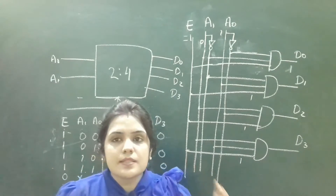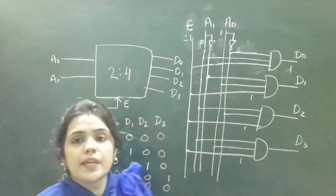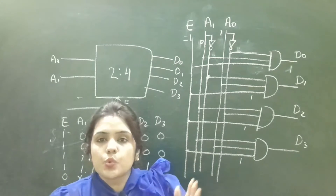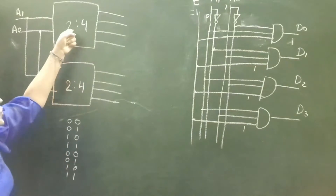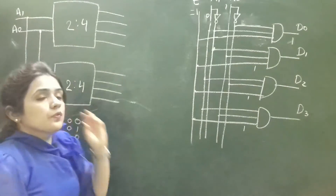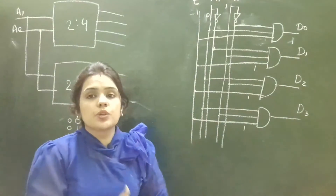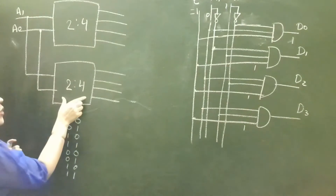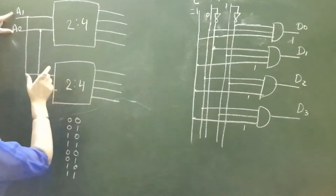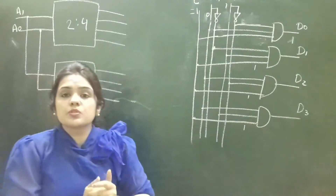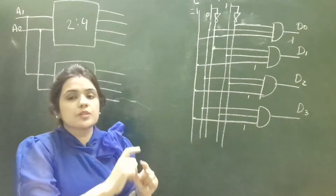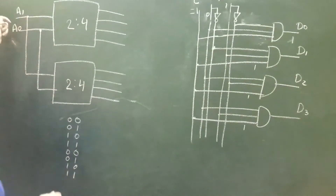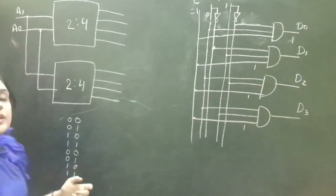Keeping this in mind, we can easily design a 3-to-8 line decoder using two 2-to-4 line decoders. These are the two 2-to-4 line decoders. A1 and A0 are the common inputs because we want a 3-to-8 line decoder, so the input should not be more than 3. A1 and A0 will be their common inputs.